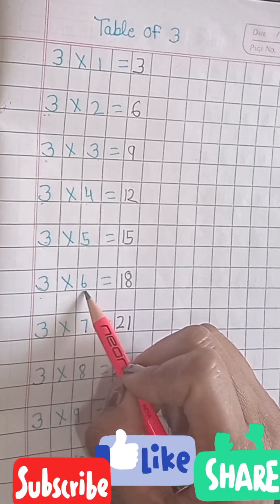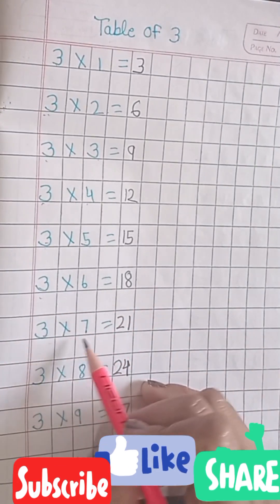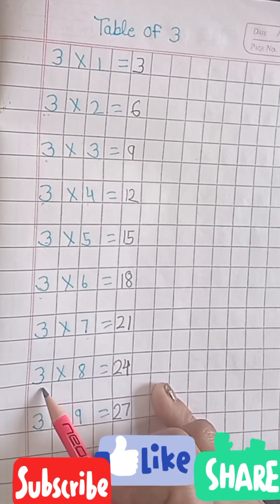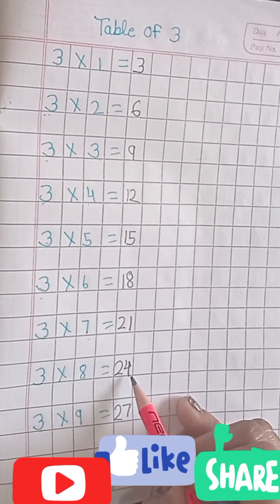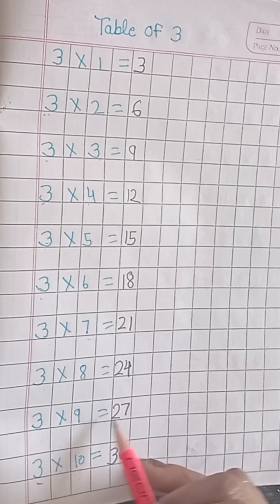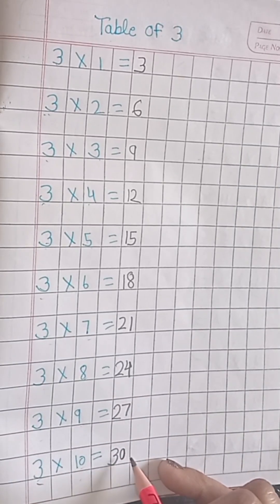Three sixes are eighteen. Three sevens are twenty-one. Three eights are twenty-four. Three nines are twenty-seven. Three tens are thirty.